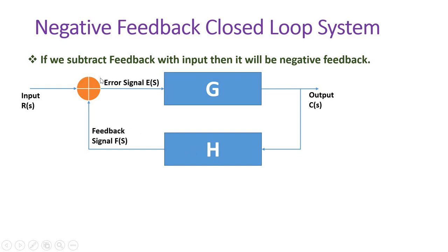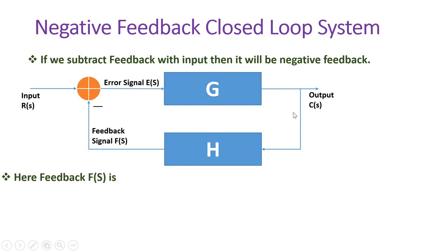Here we have negative feedback, so placing the negative sign means the error signal E(S) is the difference between the input and the feedback signal. So E(S) equals R(S) minus F(S). The feedback system output F(S) can be identified from input C(S): F(S) equals the input C(S) into gain H.